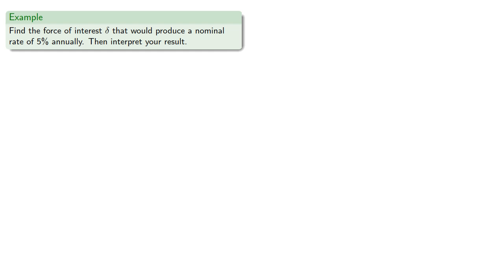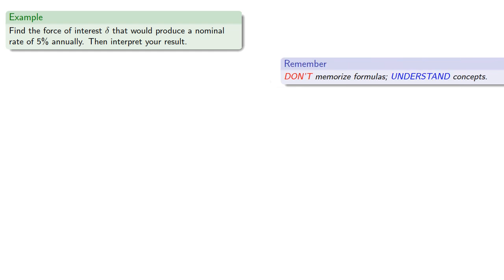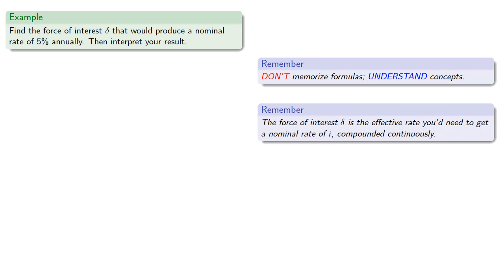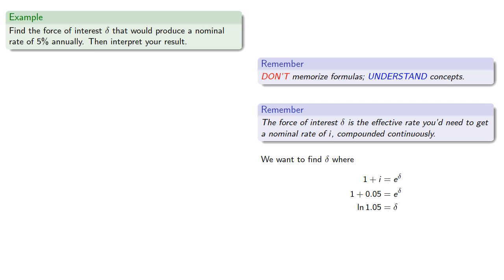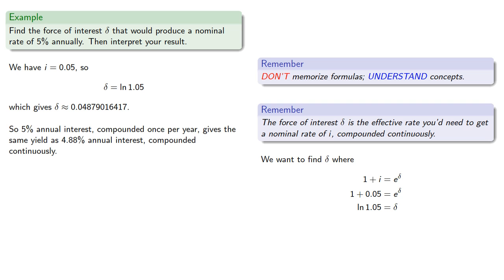For example, let's find the force of interest delta that would produce a nominal rate of 5% annually, and then interpret the results. Remember, don't memorize formulas — understand concepts. The force of interest delta is the effective rate you'd need to get a nominal rate of i compounded continuously. In other words, we want to find delta where our interest is e to the power delta. We know the interest rate, we hit both sides with a log, and we find delta is approximately 4.88%. What this means is that 5% annual interest compounded once per year gives the same yield as about 4.88% annual interest compounded continuously.